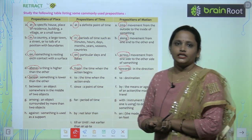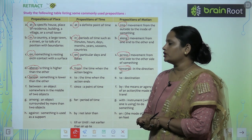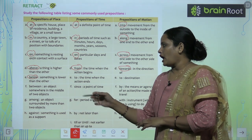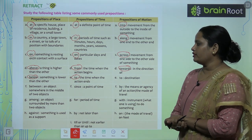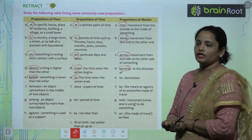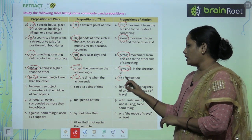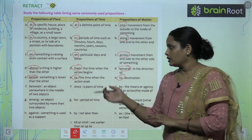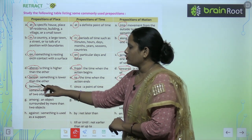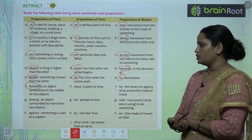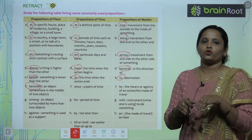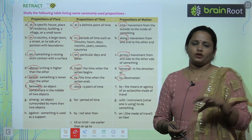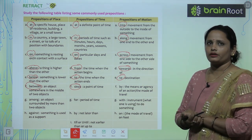'Below' means something is lower than the other — koi cheez kisi cheez ke neeche hai — but they are not touching each other. 'To' indicates the time when the action ends — kaam kab khatam ho raha hai — and also destination in case of motion. 'Between' — an object somewhere in the middle of two objects. 'Since' indicates a particular portion of time.